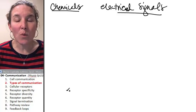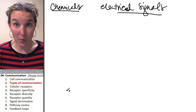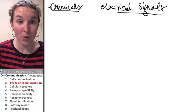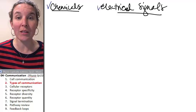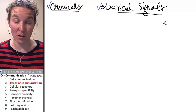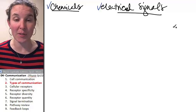There are two main ways that cells can communicate with each other: chemical, through chemical signals, or through electrical signals. Some cells actually communicate with each other via both types of signals.